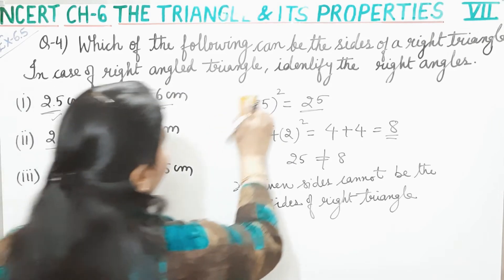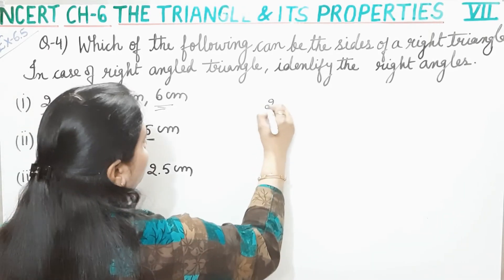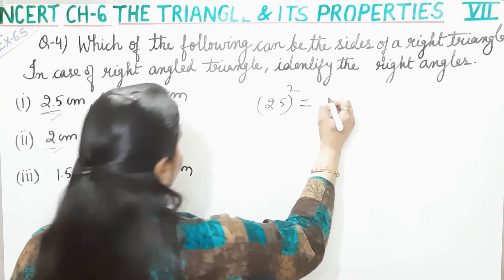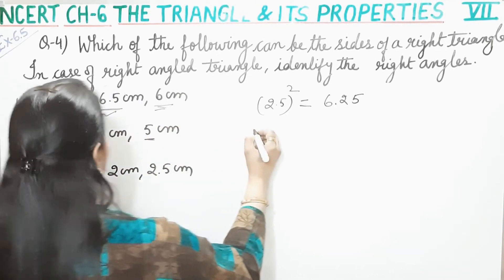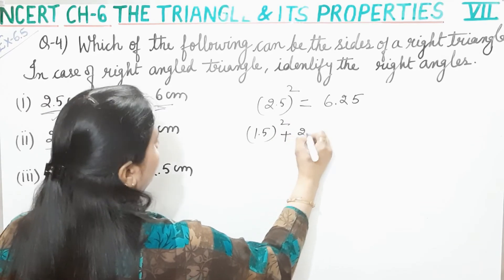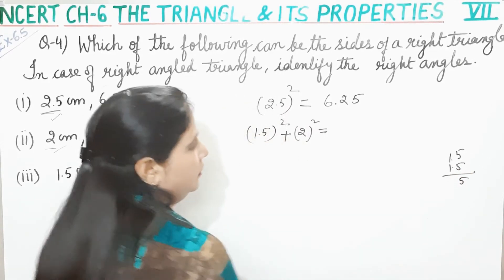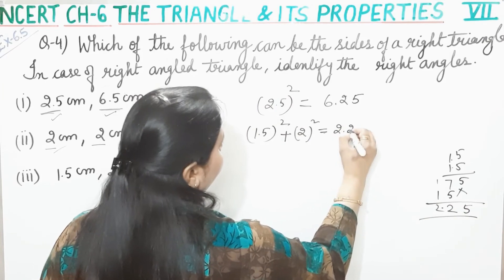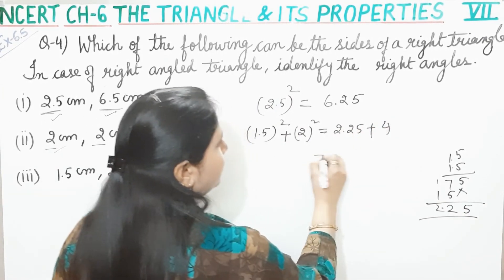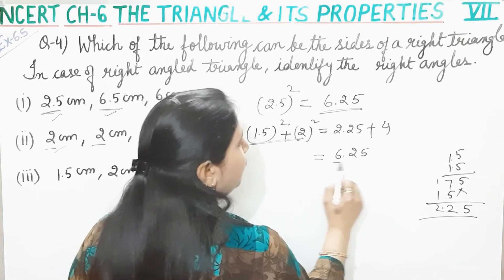Now the third part. Longest side dekhte hain — yahan 2.5 hai. 2.5 ka square plus remaining sides ka square: 1.5 ka square plus 2 ka square. 1.5 into 1.5 — 5×5=25, 1×5=5, 1×5=5, 1×1=1 — yeh aayega 2.25. Plus 2 ka square is 4. In dono ka plus karenge toh 6.25. Aur 2.5 ka square bhi 6.25 hai. Yeh dono barabar hain.